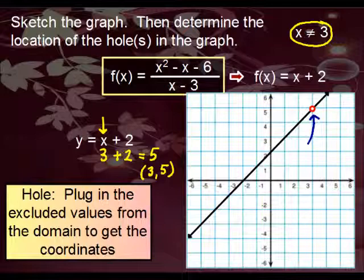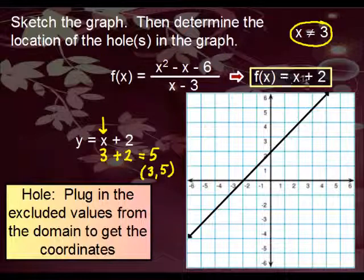Again, the difference between the graphs is this. This graph with the hole is the original equation. This simplified version is the same line but without the hole in the graph. So you have to go by what you were originally given in the first place.